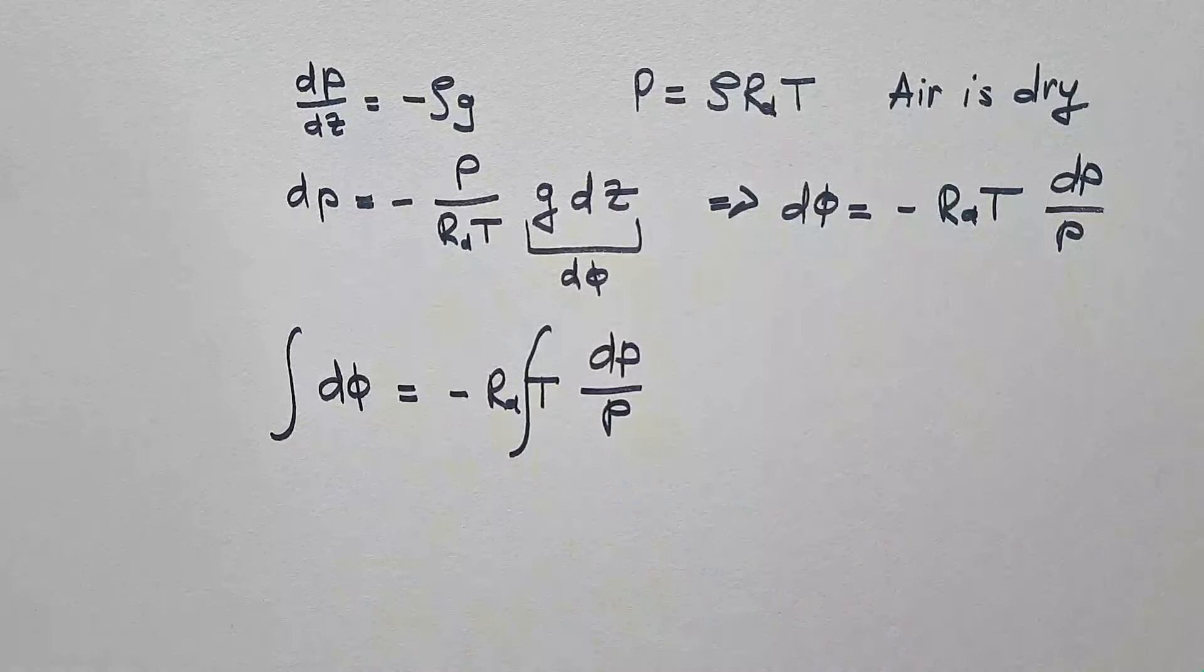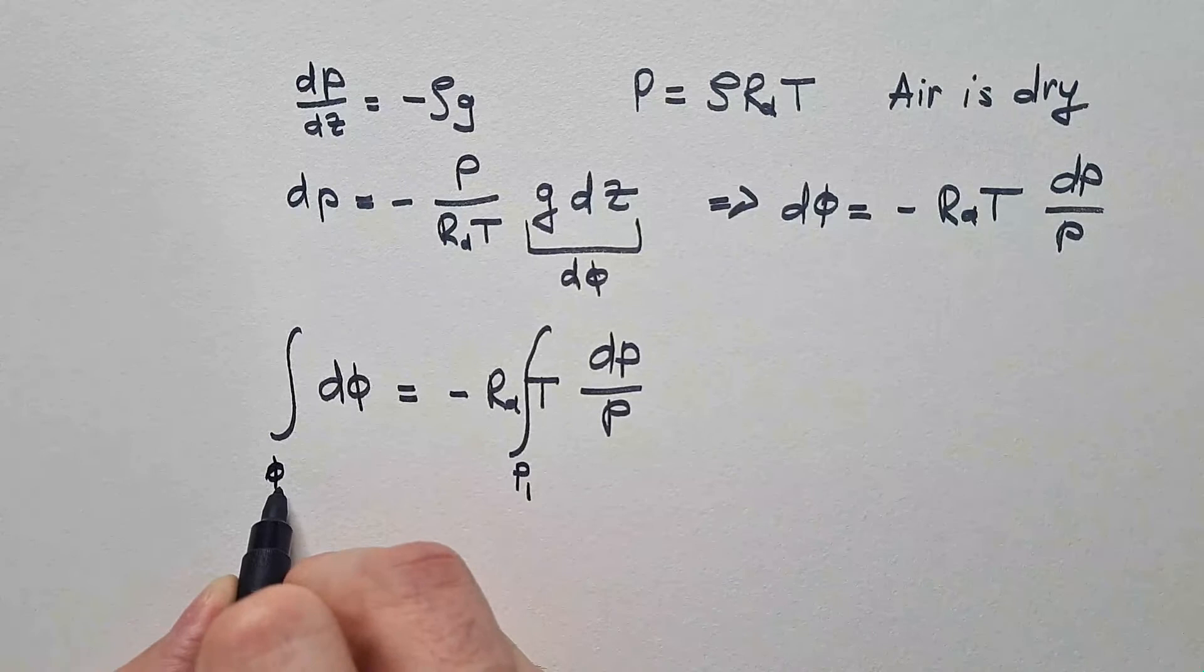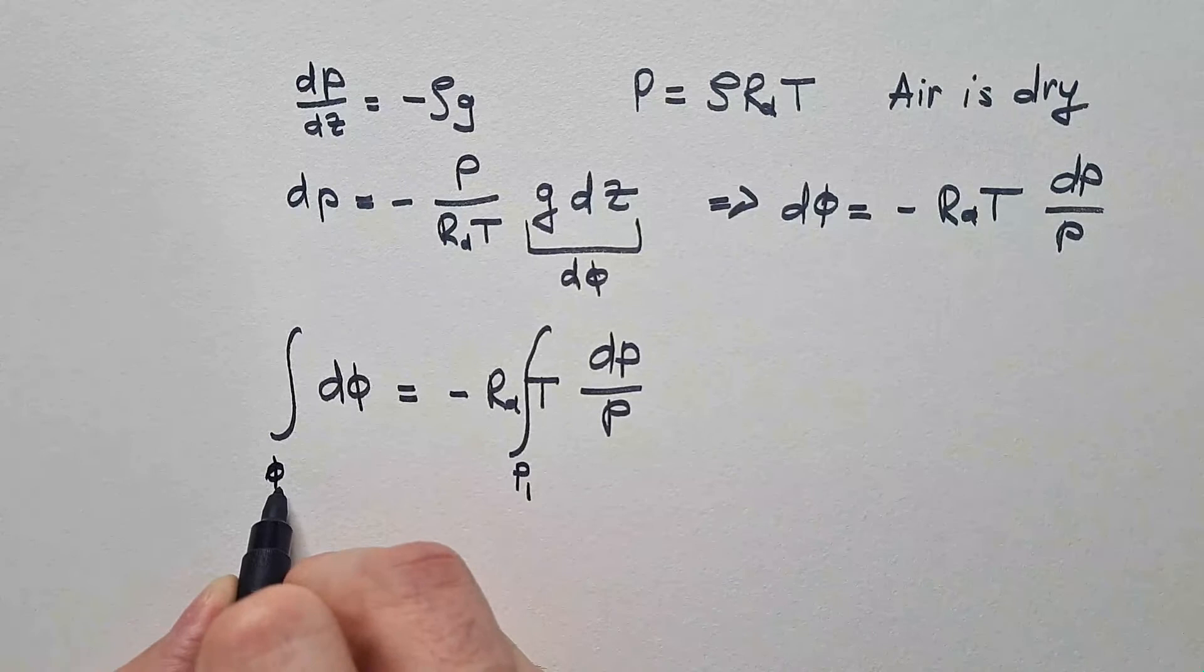And I am integrating this from pressure surface P1, where I have my geopotential phi1, to some other pressure surface P2, where I have geopotential phi2.